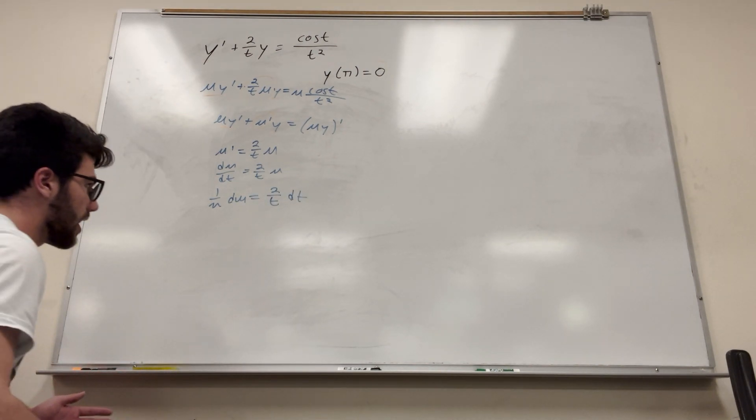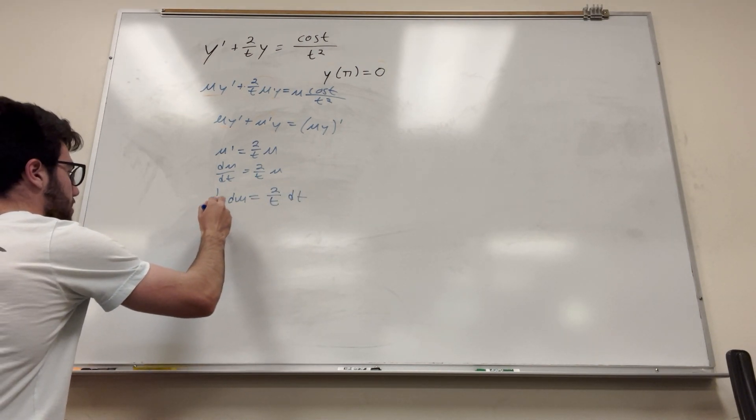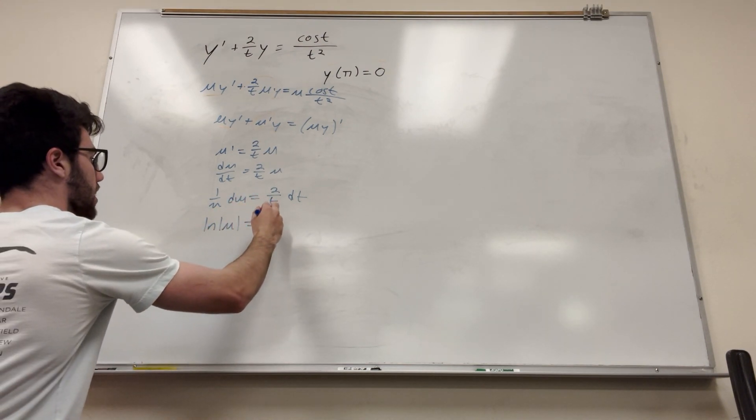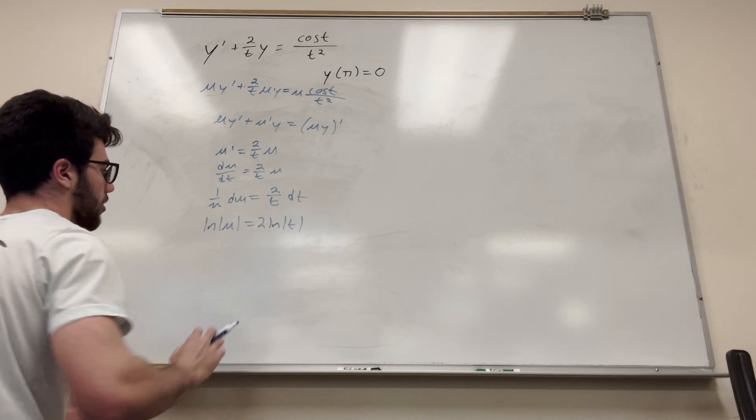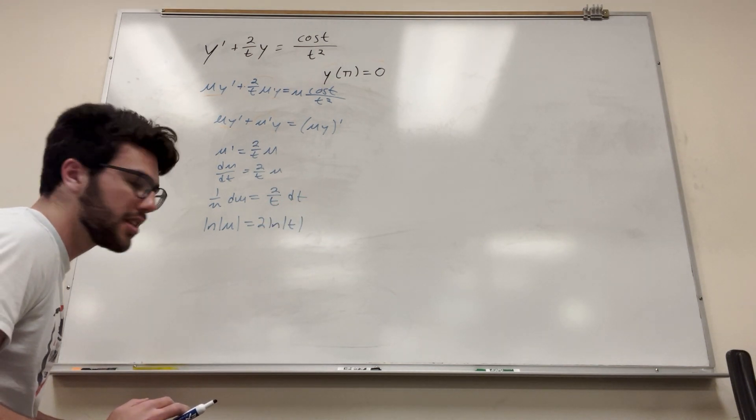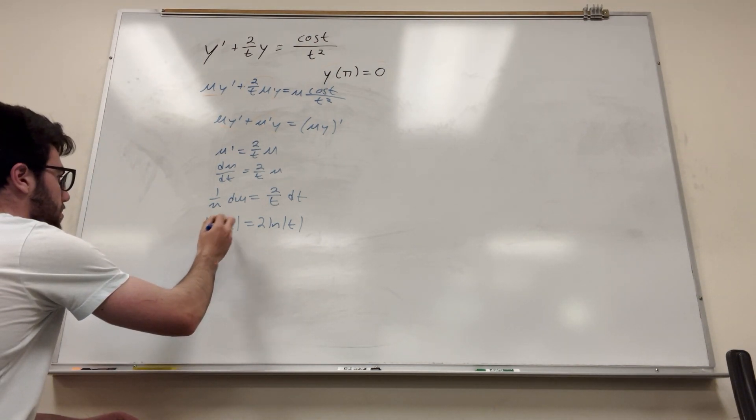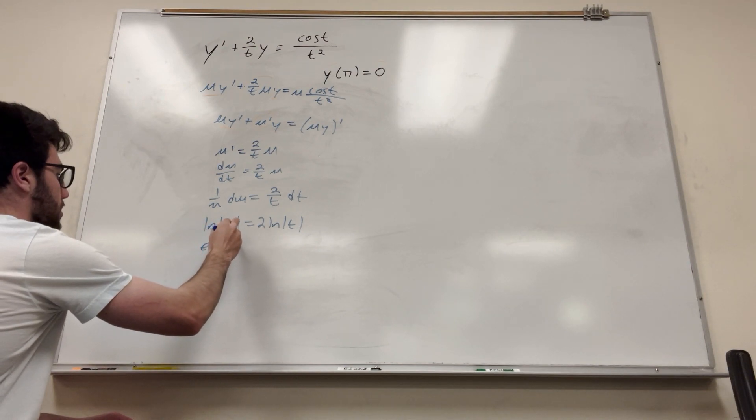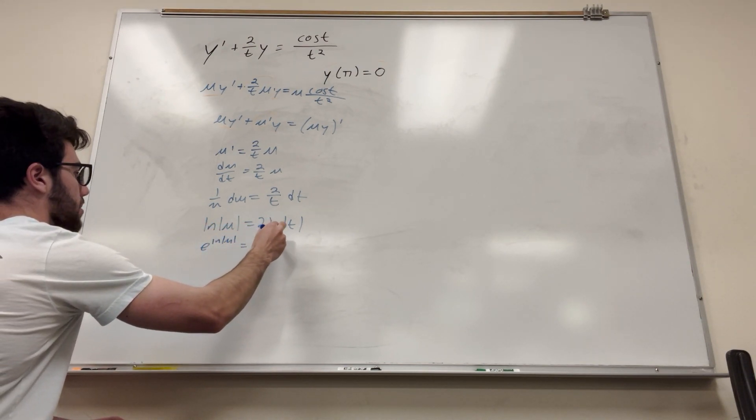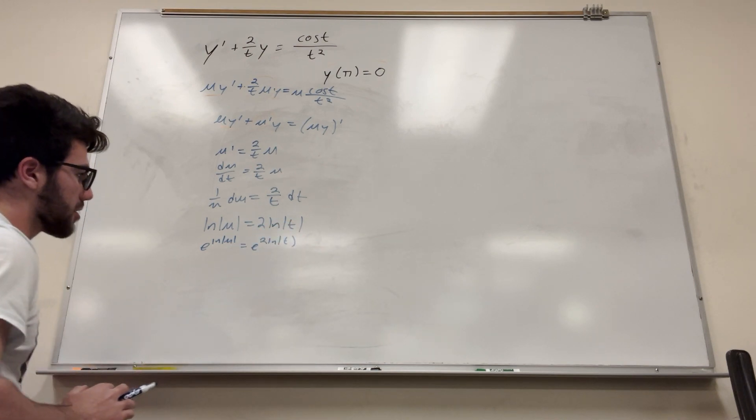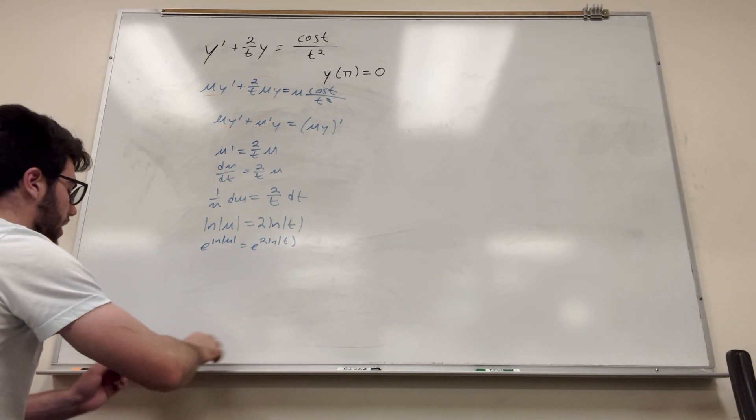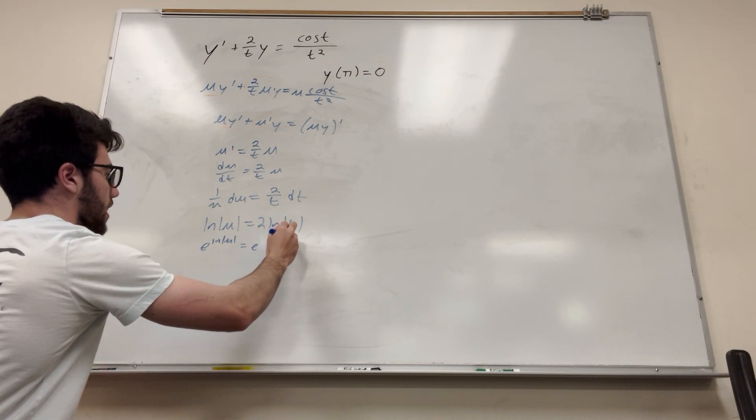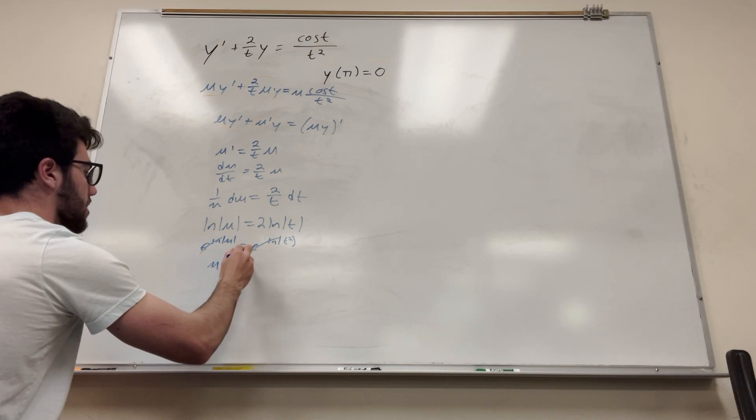Now we're going to integrate both these. So it's going to be ln absolute value of mu is equal to 2 ln absolute value of t. Don't worry about the plus c on this, not too big a deal. Then we're going to set e to both of them just to cancel out. So it's going to be e to the ln absolute value of mu is equal to e to the 2 ln absolute value of t. Now if you know how this works, the 2 ln t is the same as t squared, ln of t squared. And then we're going to cancel, cancel. So it'll just be mu is equal to t squared.